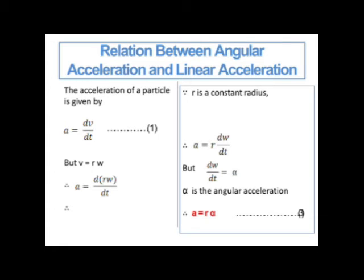Now we can see the relation between linear acceleration and angular acceleration. Linear acceleration is the rate of change of velocity, meaning a = dv/dt. For circular motion, we also know the relation v = r omega. Substituting v with r omega, it becomes a = d/dt of r omega. Since r is the radius of the circular path, which is constant, it is taken out. So a = r d(omega)/dt, which equals r alpha, where alpha is the angular acceleration. Finally, a = r alpha is the relation between linear acceleration and angular acceleration.